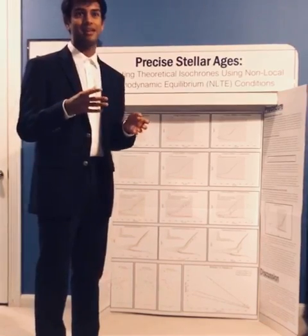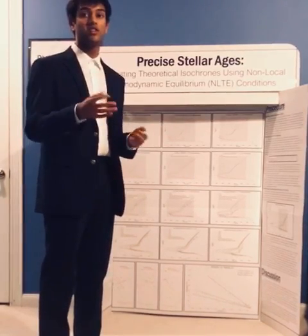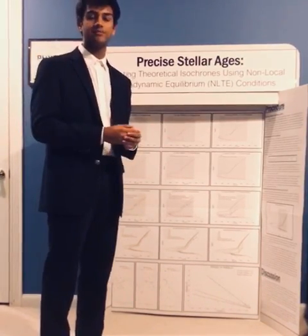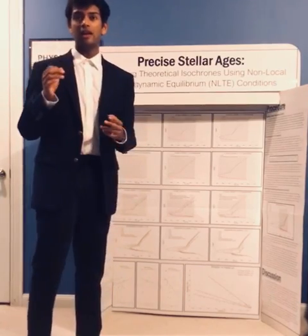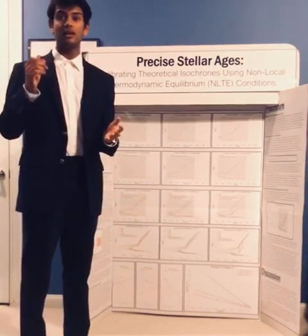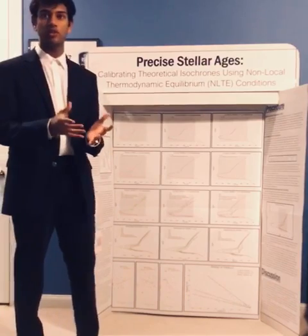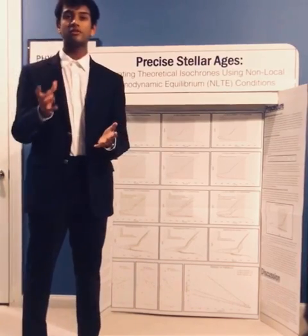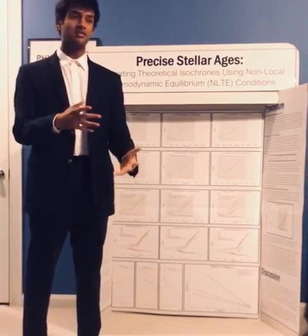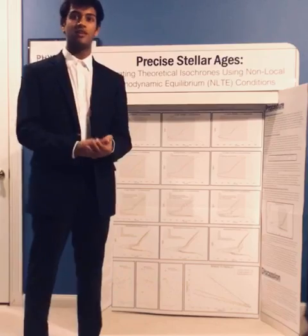That means everything in our universe is actually two billion years older than our models have predicted — it's not that we made it younger, it's that our models predicted it to be younger than it actually is. Two billion years on the astronomical scale is still a huge amount of time. The age of our universe as a whole is 13.7 billion years, and you can see what a massive discrepancy that is.